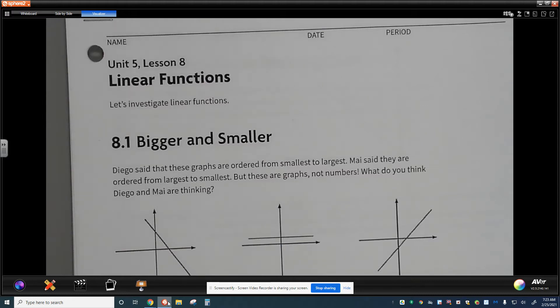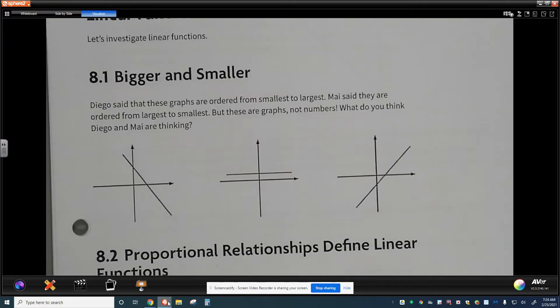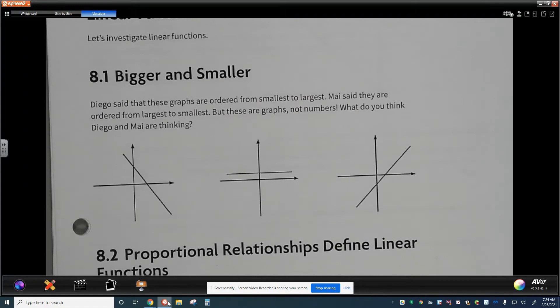Here we are with Unit 5 Lesson 8, Linear Functions. We're going to investigate a little bit more into linear functions. The first part of this, Bigger and Smaller, talks about Diego and May, and they are comparing these three graphs that are given.